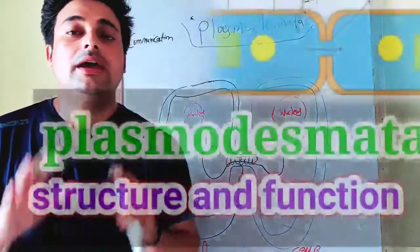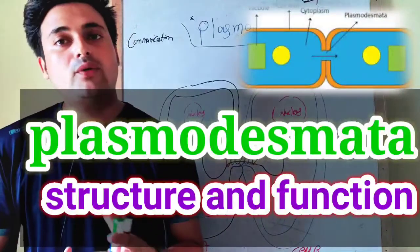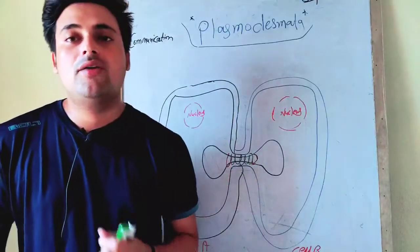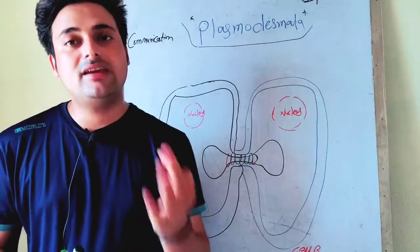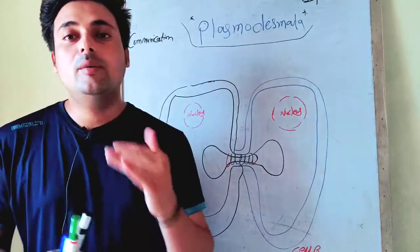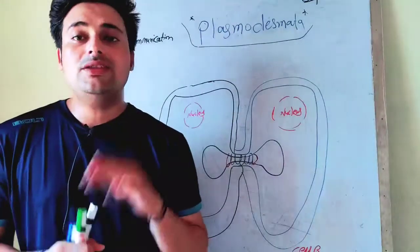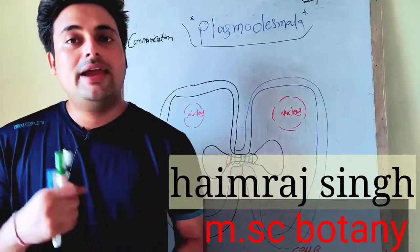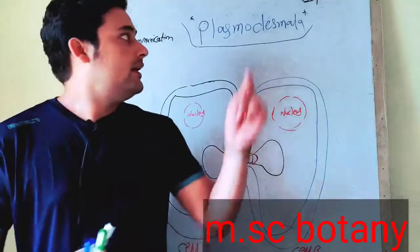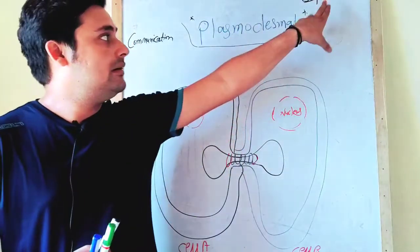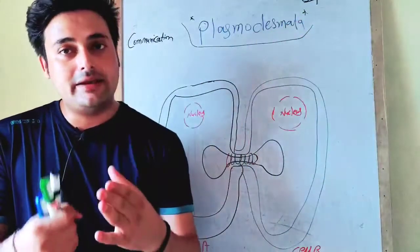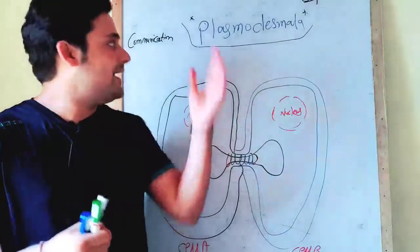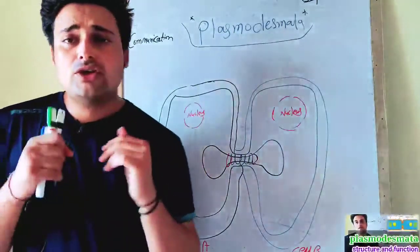Hello guys, welcome back again. In this video we will be learning about cell junctions. Three types of cell junctions can be found: the first one is occluding junctions, the second one is anchoring junctions, and the third one is communication junctions. In this specific video we will only be learning about communication junctions. It has two differentiations — it can be found as gap junctions in animal cells, while in plant cells communication junctions will be found as plasmodesmata.